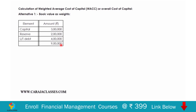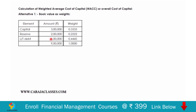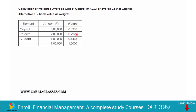All three book values put together give a total of 9 lakhs. Now we assign weightages: 3 lakhs divided by 9 lakhs gives one-third, that is 33.33% written as 0.333. Two lakhs out of 9 lakhs is 22.22%, written as 0.222. Four lakhs out of 9 lakhs is 44.45%, written as 0.4445. All weights together sum to one.